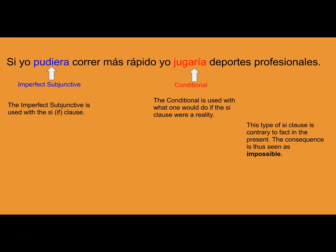The difficult thing for students is to remember which conjugation goes with which section of the sentence. An easy way to remember is that the imperfect subjunctive goes with the SI part — 'si.' So you're going to keep the letters IS and SI together. The imperfect subjunctive is always used to express the SI part of a SI clause.